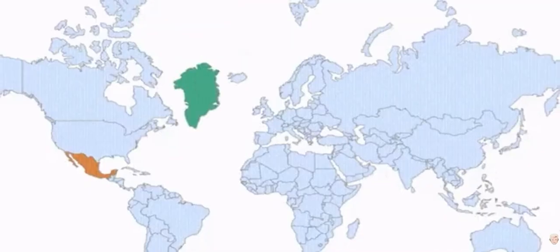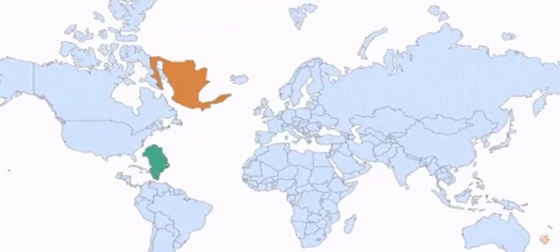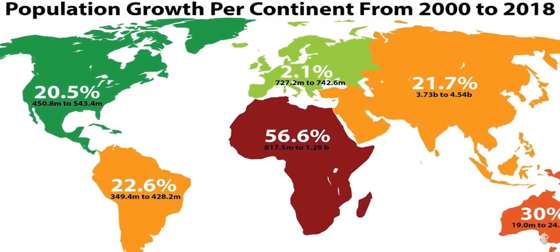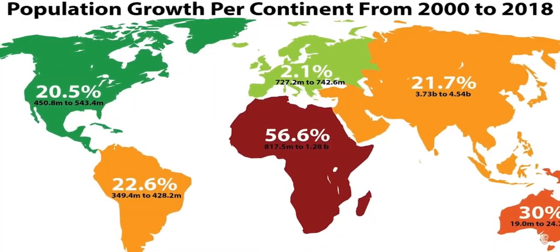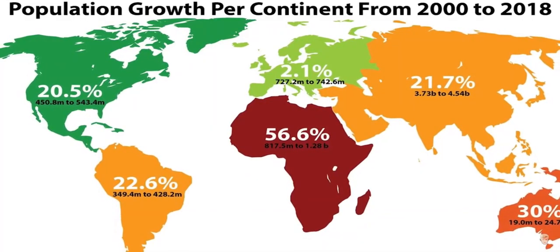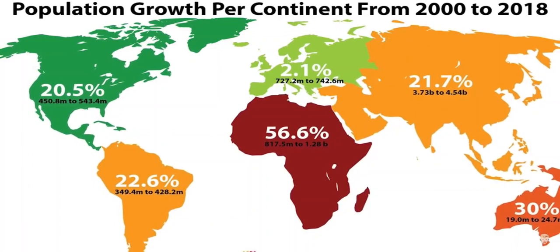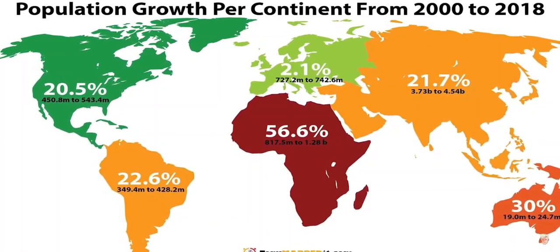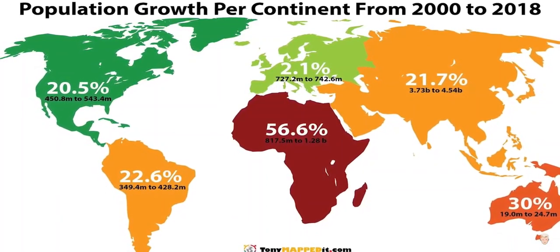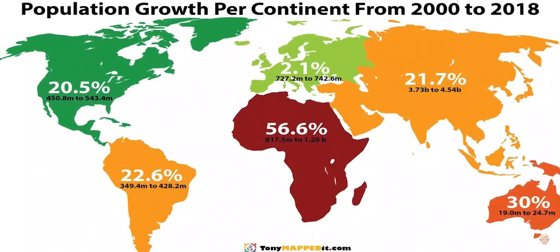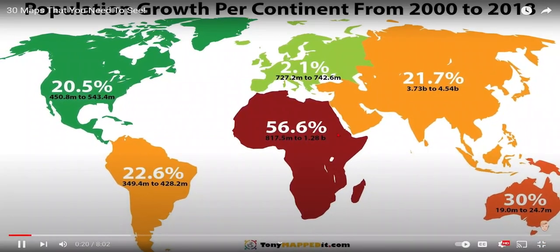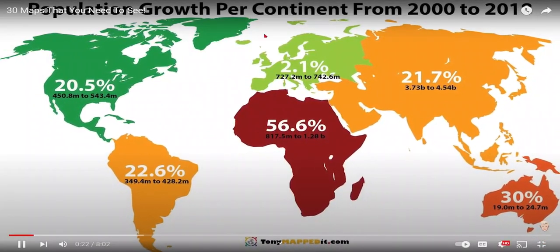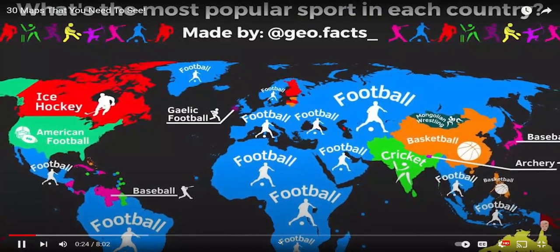Come back to yet another map video where we take a look at the best maps I found and created. This first map shows us the population growth per continent from 2000 to 2018. Just look at the difference between Africa and Europe — take a good look.